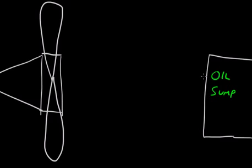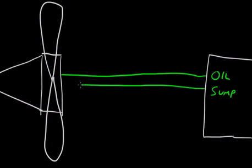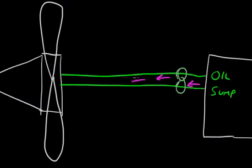We should have a line moving the oil from the sump to the hub. We should also have a pump to pump the oil. The pump is not very important, so it'll be drawn in light green. The pump moves the oil to the hub. So the oil is moving in this direction right here, and it flows into the prop hub in this direction.